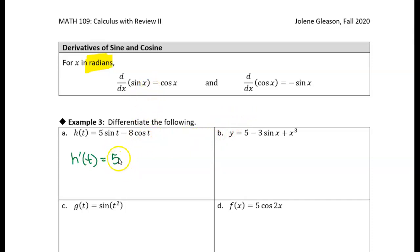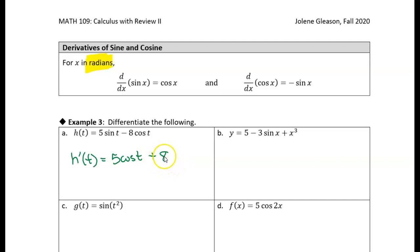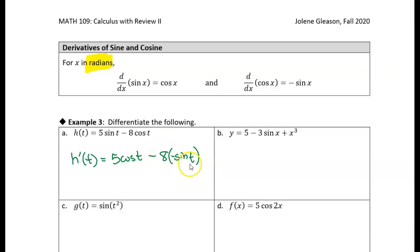So this first term is just 5 cosine of t. Then we have minus 8 times cosine of t, but we want the derivative of cosine, which is negative sine. Because I have a minus here and I'm taking this times negative sine of t, I need to be careful. If you write it without parentheses, it can look like 8 minus sine of t — that's not what you want. It's negative 8 times negative sine of t, so put the parentheses in.